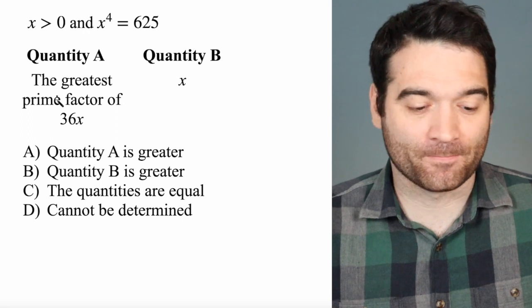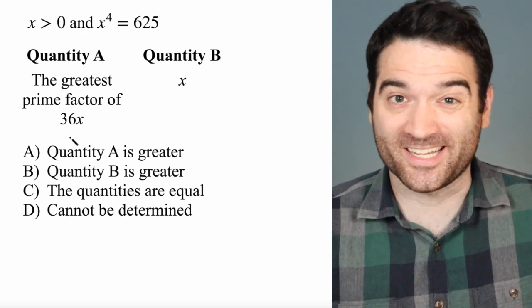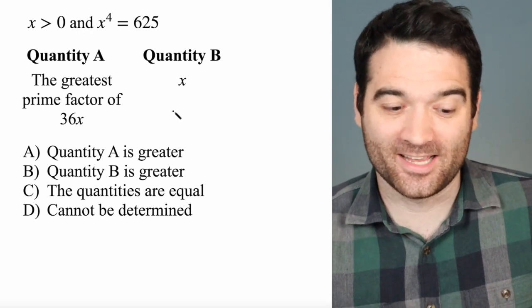So we want to know what's greater. Quantity A, the greatest prime factor of 36x, or quantity B, x itself.